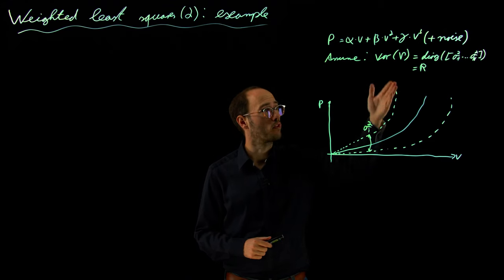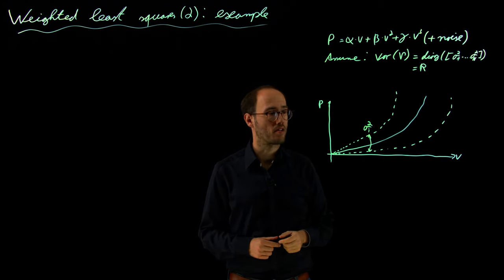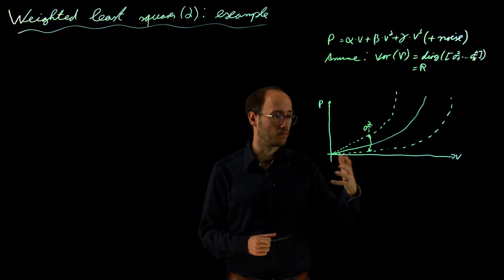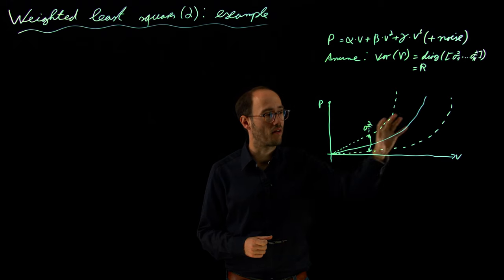So that would not be in line with our ordinary least-squares approach where we assume constant noise characteristics, but here we have basically an increasing noise over speed.